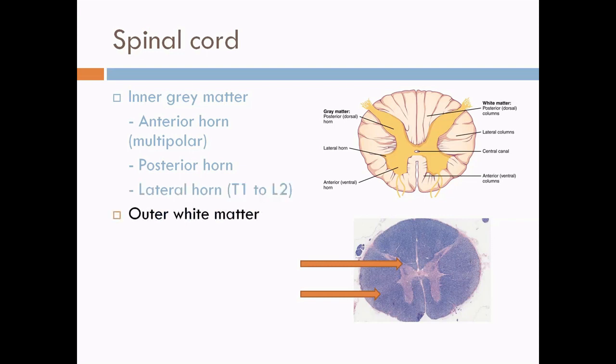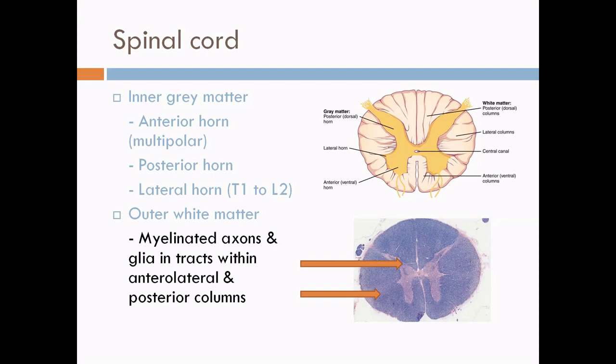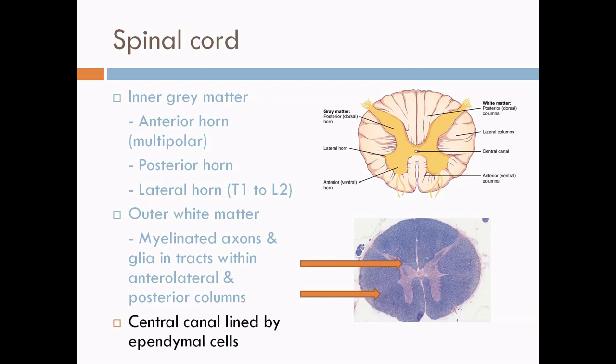The outer white matter contains myelinated axons which are arranged into the anterolateral and the posterior white columns. The central canal of the spinal cord is lined by ependymal cells.